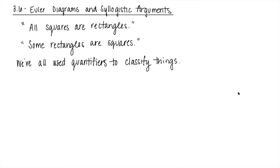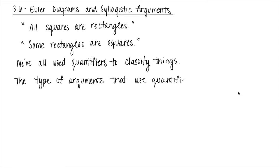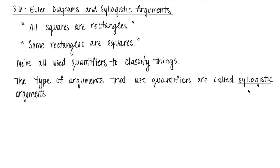You make generalizations, you talk about groups — all the students in this class, all the students at this school, all the workers, whatever it is. The type of arguments that use quantifiers are called syllogistic arguments or syllogisms. We don't have a way to discuss whether that statement is true or false immediately, so I can't apply a truth table.